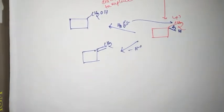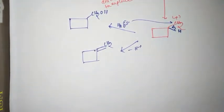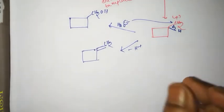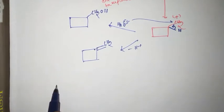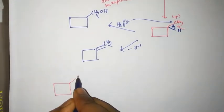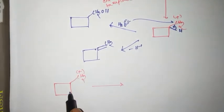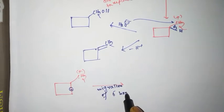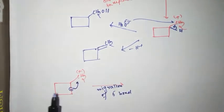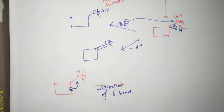Another possibility is migration of sigma bond. Here the 4-member ring is converted to 5-member ring.